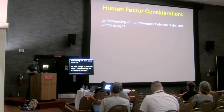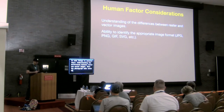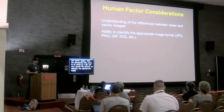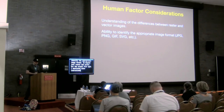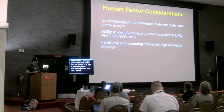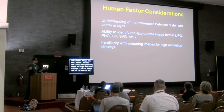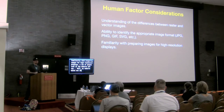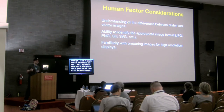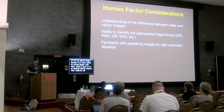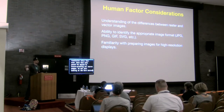Some things to consider: understand the differences between raster and vector images. Does a photograph make sense to be saved as a GIF and vice versa? The ability to identify the appropriate image format — beyond just raster and vector but the actual file type, color limitations, and so on. And familiarity with preparing images for high resolution displays. A lot of people look at their website and say, my website maxes out at 1100 pixels, so that's the image size for all my source images. Until you open it on a MacBook retina display, which requires an image resolution twice that size. We should be future-proofing our source images — not just looking at the bare minimum today, but making sure we have resolution to play with down the line.